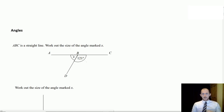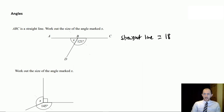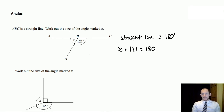Next we have properties of angles. Angles on a straight line add to 180 degrees. So in this case, x plus 121 should equal 180, which means x must therefore be 59 degrees. You need to be able to not only know the properties but also use them in questions.